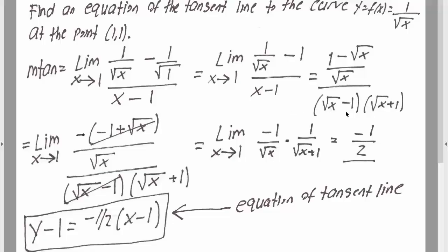Square root of x times square root of x, you have x. Negative 1 times 1, you have negative 1. This times this plus this times this is 0.